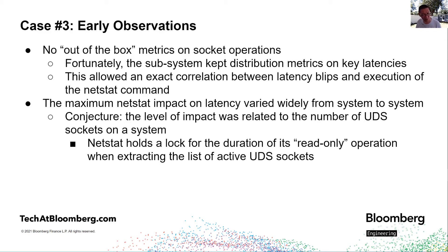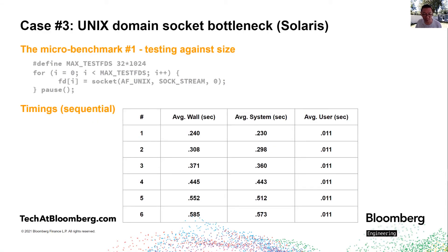Why do these violations happen more frequently on our systems? It turns out that on our systems we have lots of Unix domain sockets, so the problem correlates with a large number of sockets. Unfortunately the only way to count Unix domain sockets is to run NETSTAT, which we're now trying to avoid. We needed a way to test the conjecture that the number of Unix domain sockets contributes to this behavior. Another microbenchmark to the rescue — but this time we weren't looking for contention. We wanted to create a known number of Unix domain sockets and measure the amount of time NETSTAT holds its lock as a function of the number of sockets.